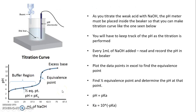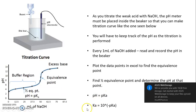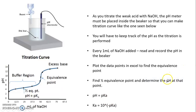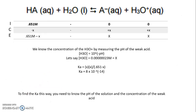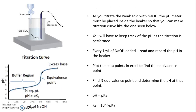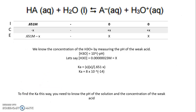Once we have the equivalence point from the graph, we can find the half-equivalence point, look up the pH at that point in our table, and that pH equals the pKa. Once we know the pKa, we get Ka by calculating 10^(−pKa). With Ka known, we go to a reference table to identify which unknown acid we're working with.